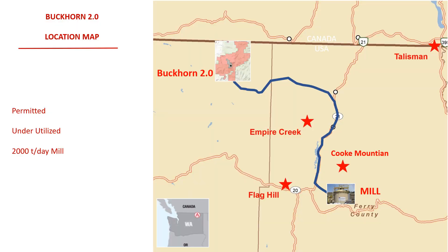This map shows our various projects, and you can see Buckhorn tucked right up against the Canadian-U.S. border. It's about 80 kilometers by road to Kinross' Kettle River Mill, which is currently under care and maintenance.